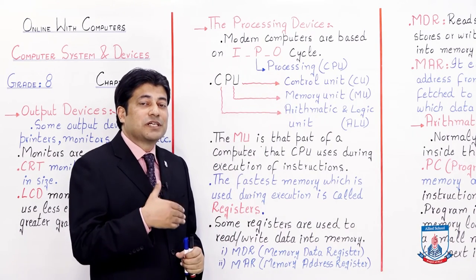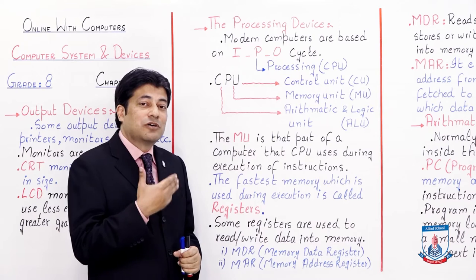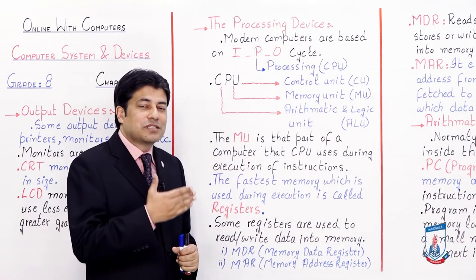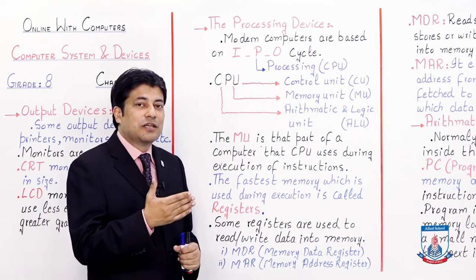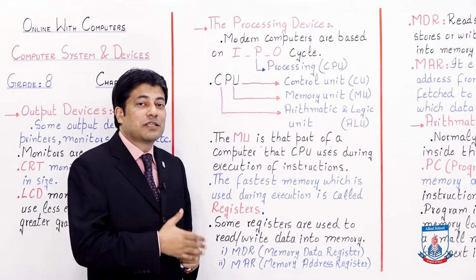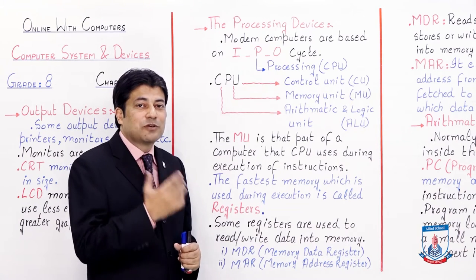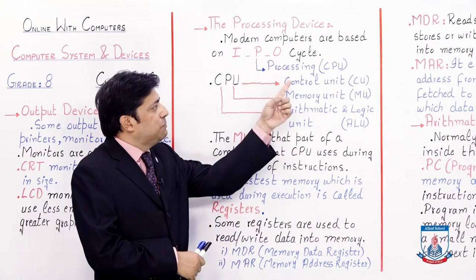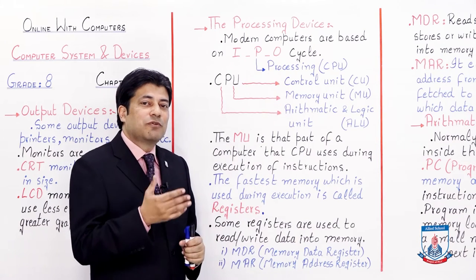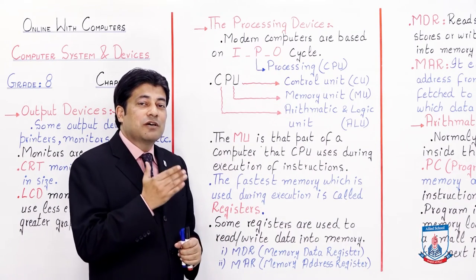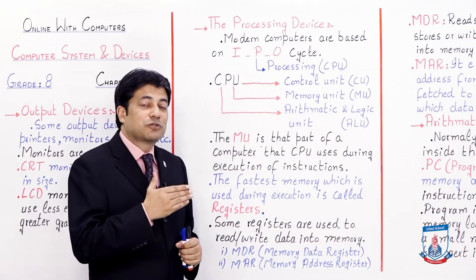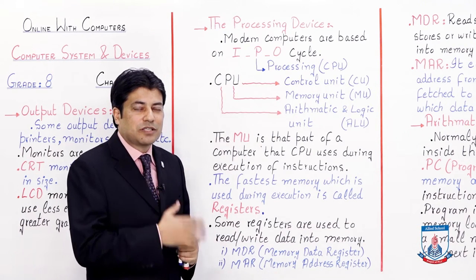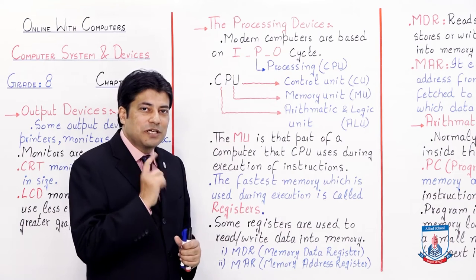You know that the device used for processing in a computer is called CPU, which means Central Processing Unit. In other words, we call it the brain of the computer. CPU will process and show you the output on screen. So you can remember it.